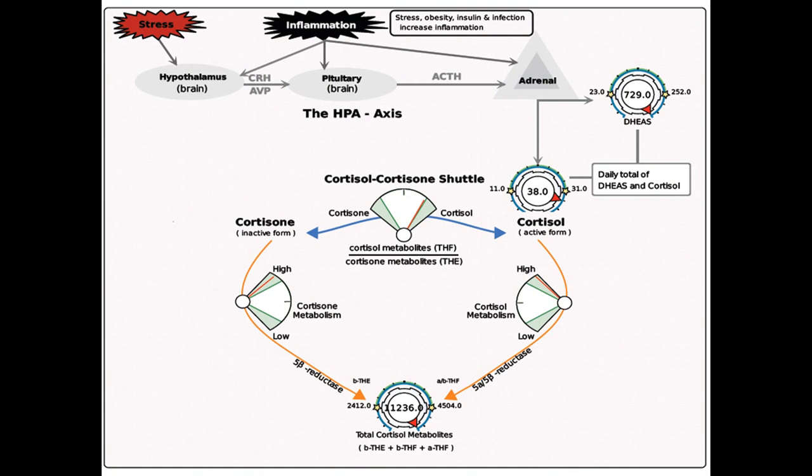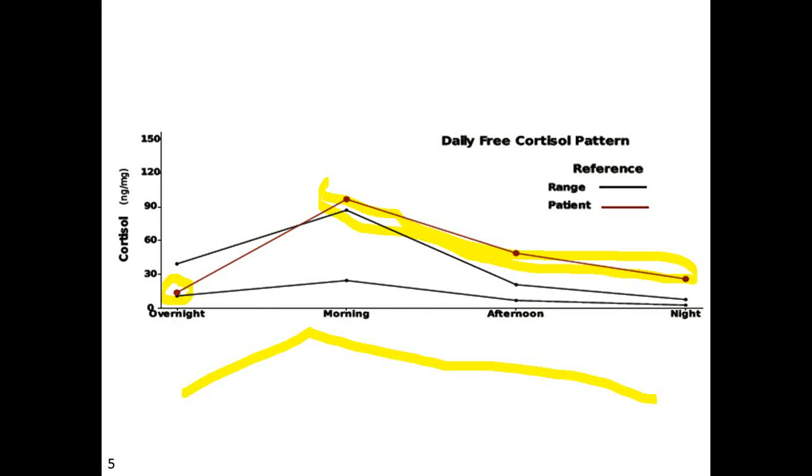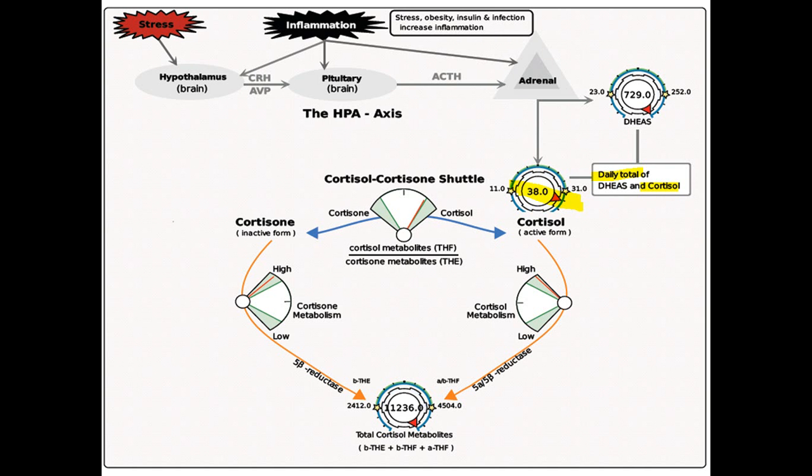As always, we take the integration of the area under that curve, or essentially an aggregate of those four, and that gives you the daily total of free cortisol. In that case, you can see she's a little bit elevated. But keep in mind, that number is being dragged down quite a bit by this overnight sample, which is actually on the lower side. So during the day, she's got a lot of cortisol. She's very high, so HPA axis activity here is pretty high.